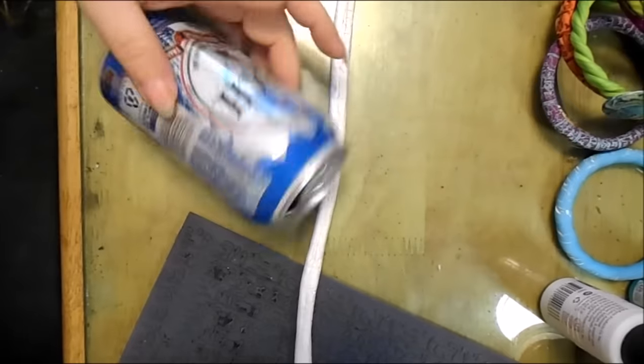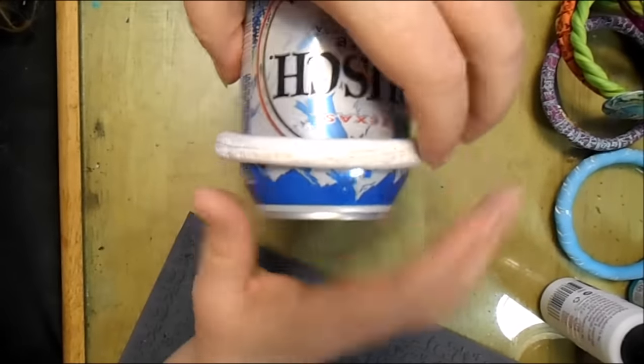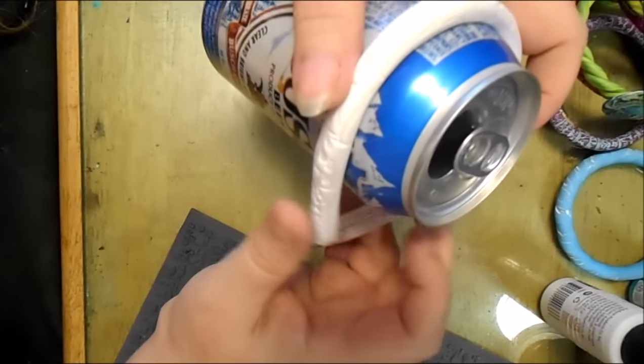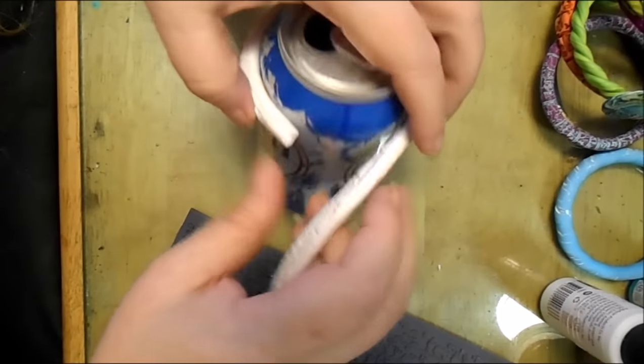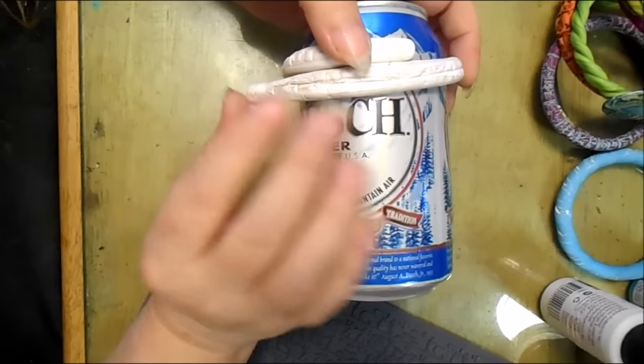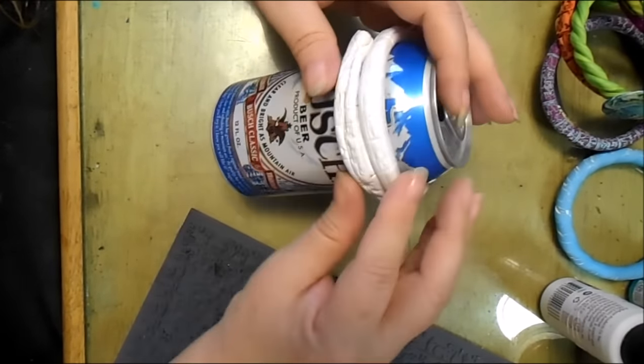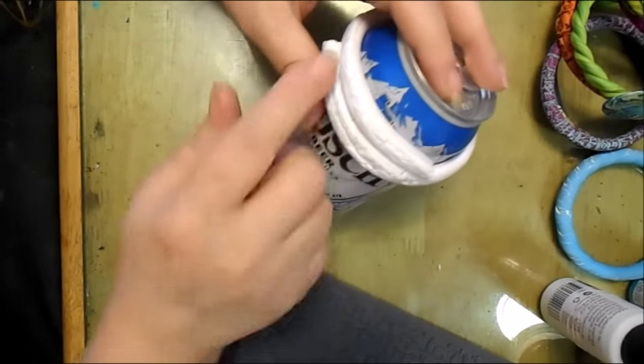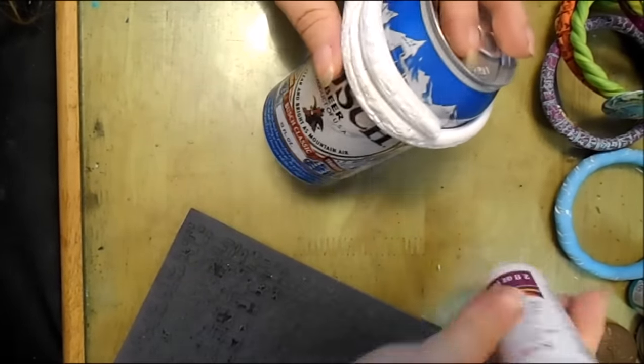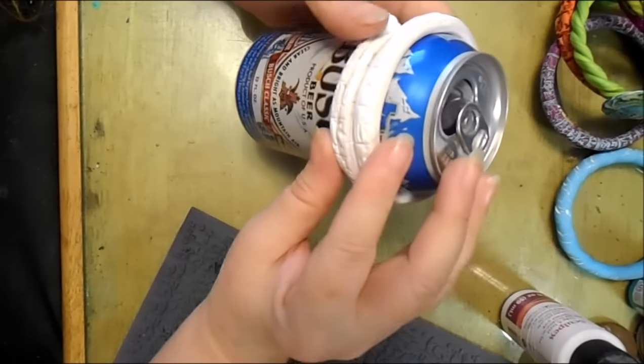All right, then I'm going to roll it around the can. Now what you can do is you can either let them bypass each other on the end like that and put a little bit of Sculpy Bake and Bond in there, and that'll hold it together and be very flexible as well.